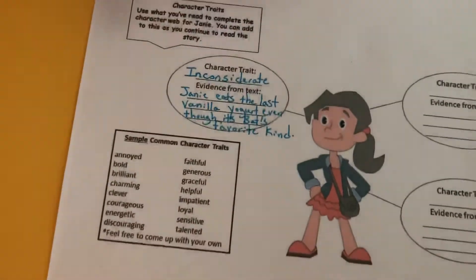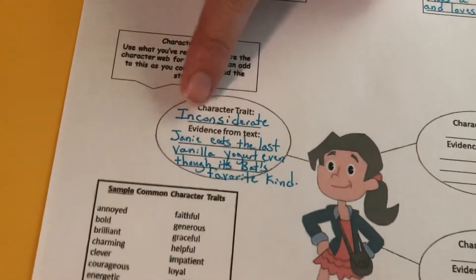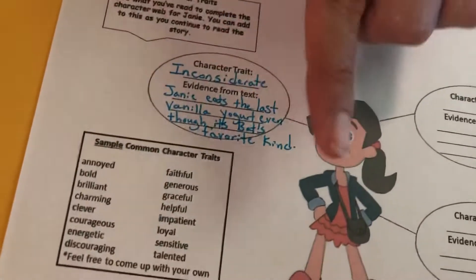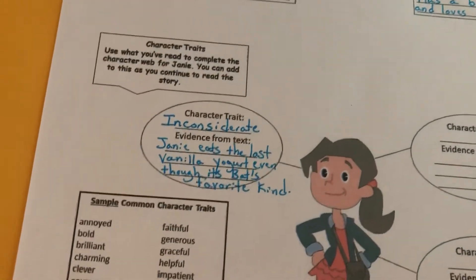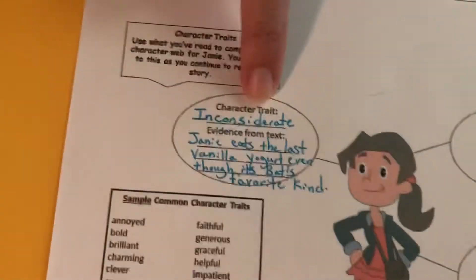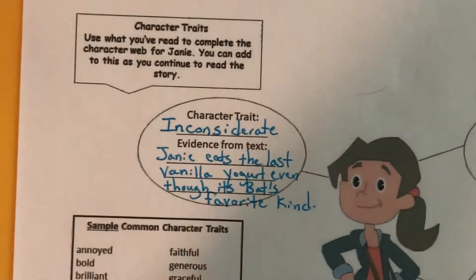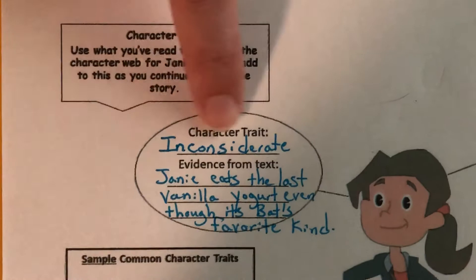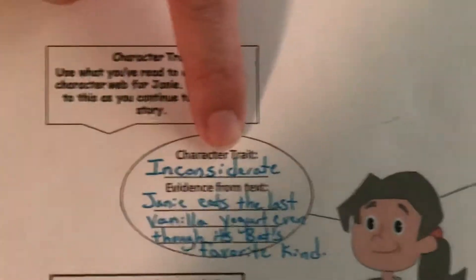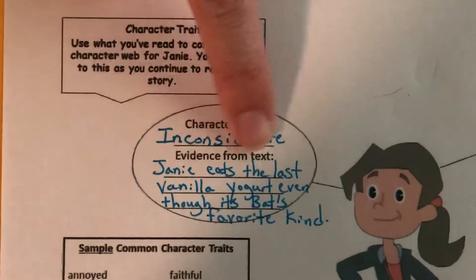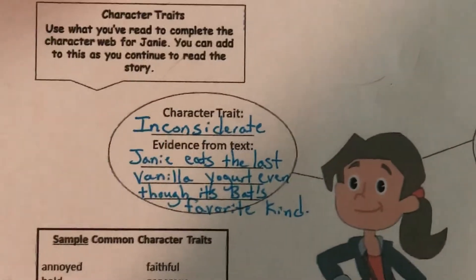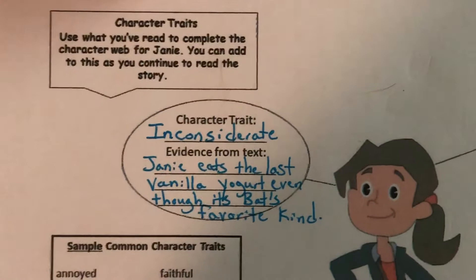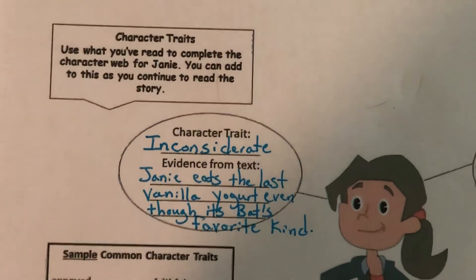Here's what I did — I gave you some example character traits, but the character trait I chose to describe Janie was inconsiderate. You can use this one; just change up the wording a little bit so I know you're doing some independent thinking. Inconsiderate means not very thoughtful, not very kind or compassionate towards others, maybe doesn't think of others that often. The evidence I used to support that character trait is: Janie eats the last vanilla yogurt, even though it's Bat's favorite kind. That was the evidence from the text. But I'm really hoping that will turn around for Janie as we continue to read the book.